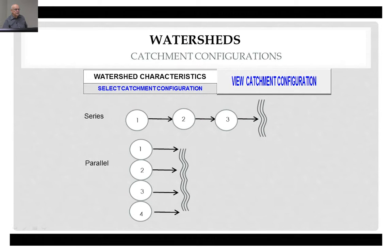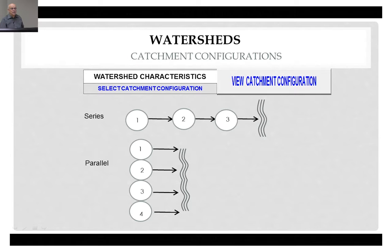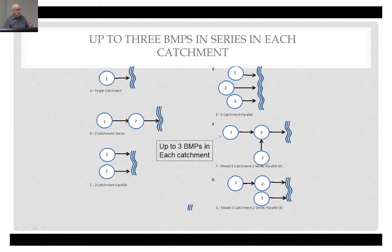Continuing on, there are various other options. You can have a single BMP, two options in series, two options in series with one in parallel, or two in series with another one coming in. There are 14 different catchment configurations, plus you can have three BMPs within each catchment as long as those BMPs are in series. So you could have three BMPs in series and up to 14 different catchment configurations, giving you a lot of opportunities. As you work through the model, you should set this up beforehand or at least have a good idea of your system configuration before you get into it.